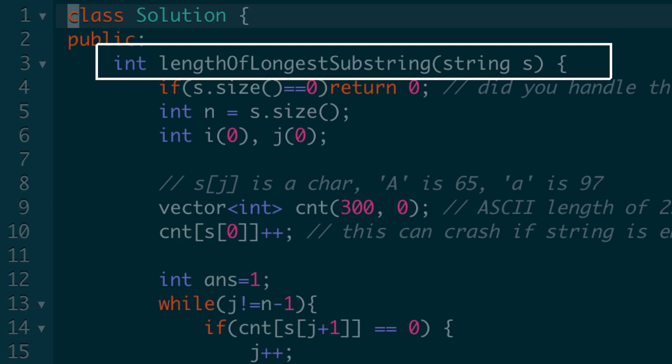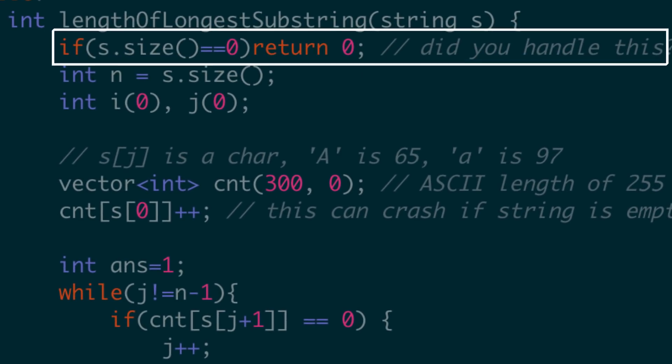So the function is lengthOfLongestSubstring, which takes input as string and returns the longest substring which has no duplicates. Now, as you can see, if the size is 0, meaning the input string is empty, you have to return 0 because you cannot form any substring. But this is something which you should handle and I'm not sure if you did it. If you did not, it might happen that your function crashes if an empty string is given as input, which is a red flag when you're talking about interviews. So these are the kind of things which I really want you to be cognizant about while you're writing code.